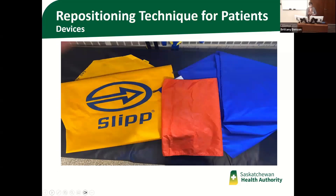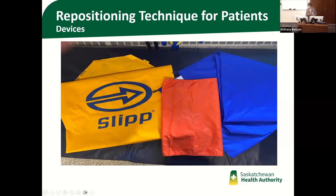These are some of the different slippery repositioning devices available in the Saskatchewan Health Authority. They can be ordered from stores at any of the hospitals in Saskatoon. The slip device is gel-filled. The blue tube and orange tube are washable in the washing machine, are open-ended, and will roll along with the fold.